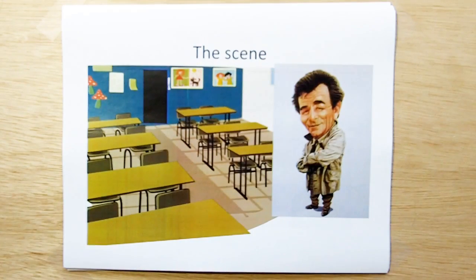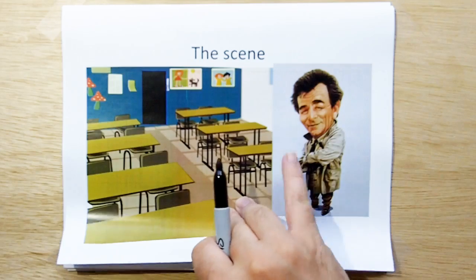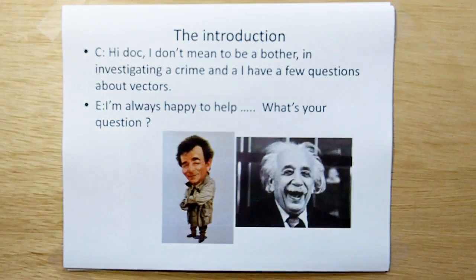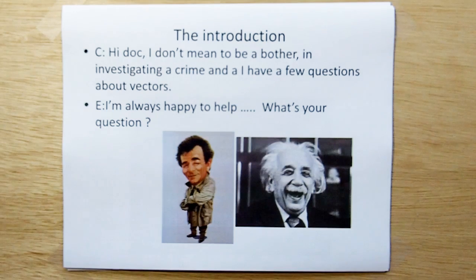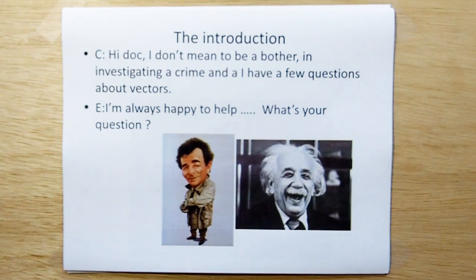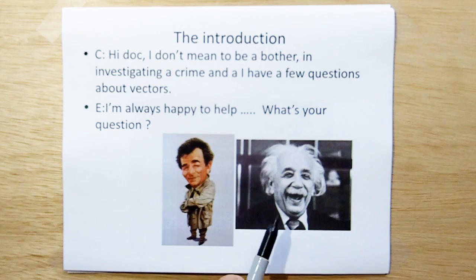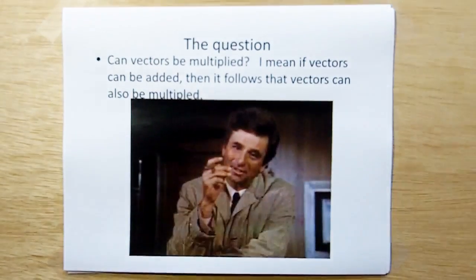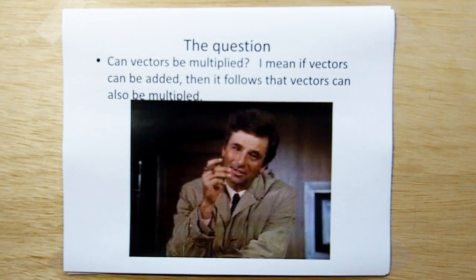The scene is a classroom where Professor Einstein is teaching and Columbo comes in. Columbo says, 'Hi Doc, I don't mean to bother you. I'm investigating a crime and I have a few questions about vectors to ask you.' You can tell the new math construct involves vectors. The question he has is: can vectors be multiplied? If vectors can be added, then it follows that vectors should also be multiplied.